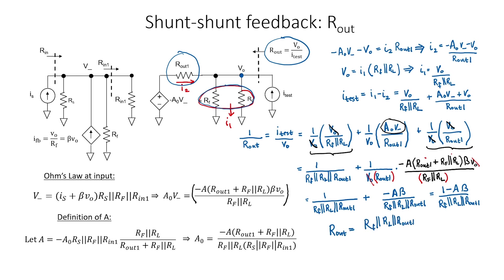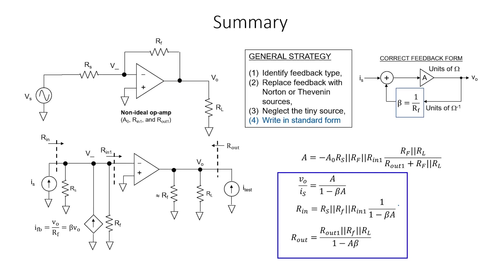Clearly, shunt feedback at the output side of the circuit has served to reduce the output impedance relative to the case without feedback attached. Furthermore, we can see the effect of the feedback resistor in this calculation. In summary, with the shunt-shunt configuration, feedback has served to reduce the gain, reduce the input impedance, and reduce the output impedance.